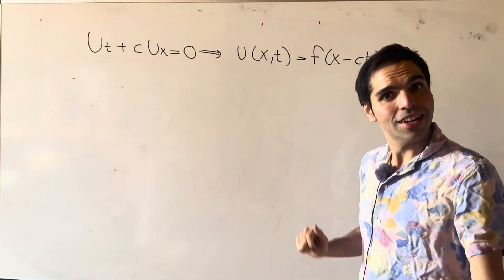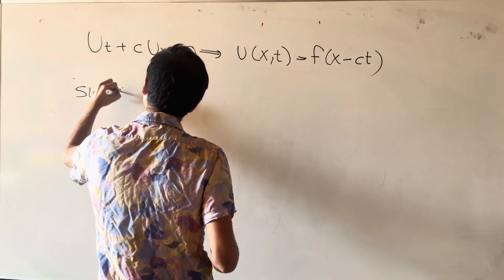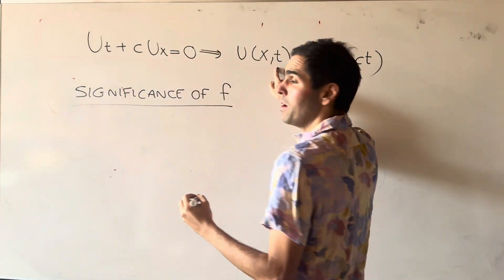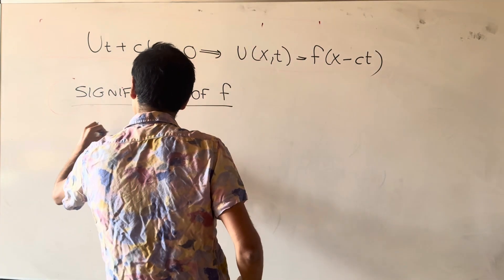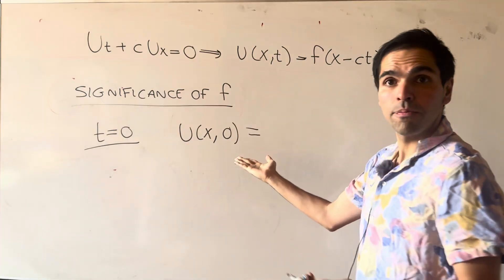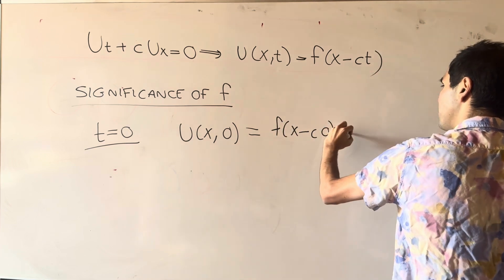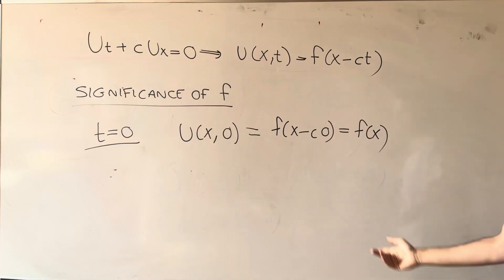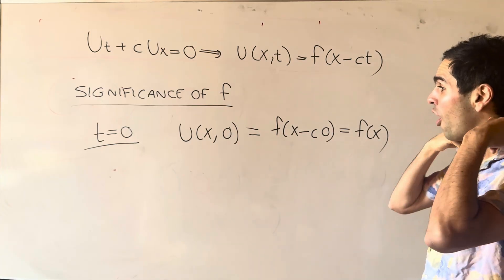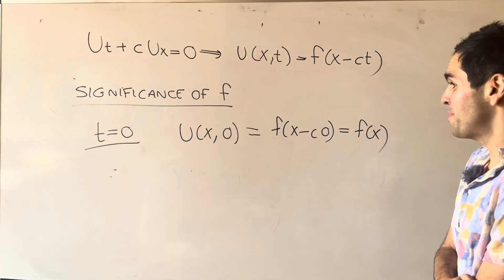Now it turns out for this equation there is a special significance of f, because if you plug in t equals 0 in this equation, then on the one hand you get u of x comma 0, which is the initial condition. On the other hand, f of x minus c times 0, which is f of x. So what is this function f? It is precisely the initial condition of our transport equation, which does not always happen but it's very special here.